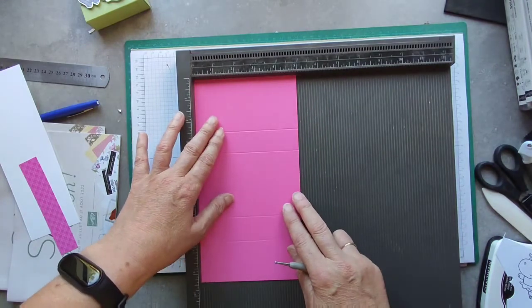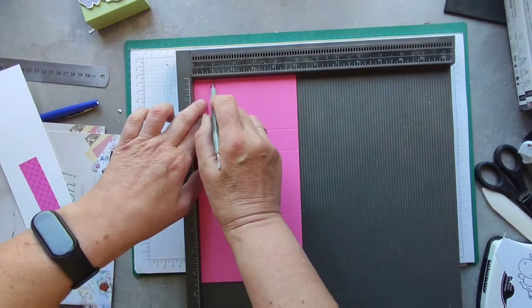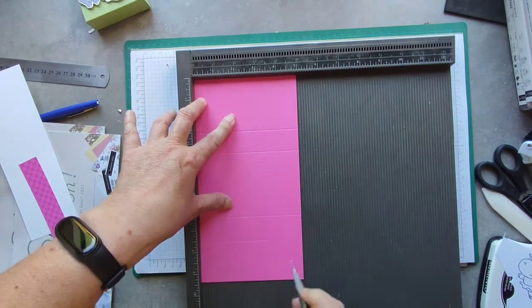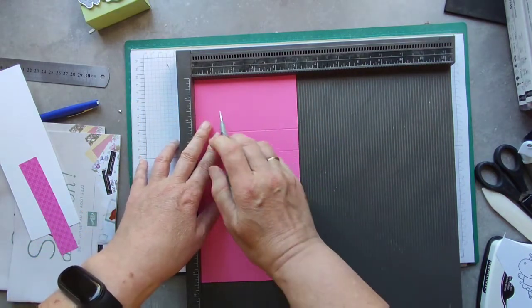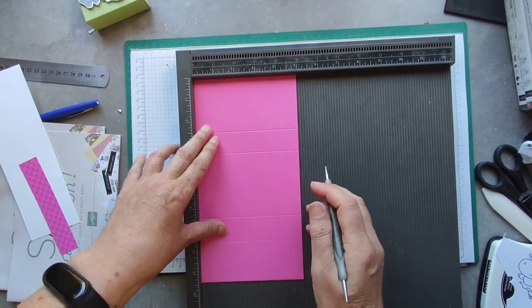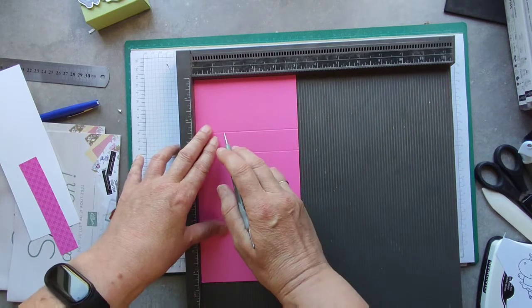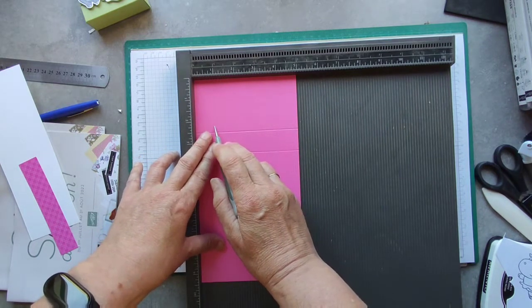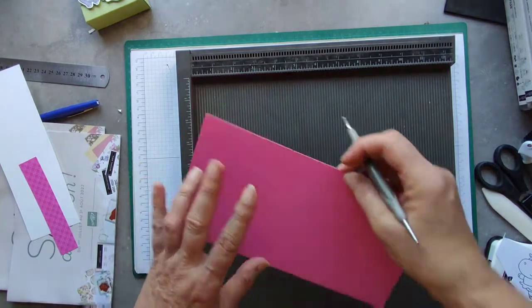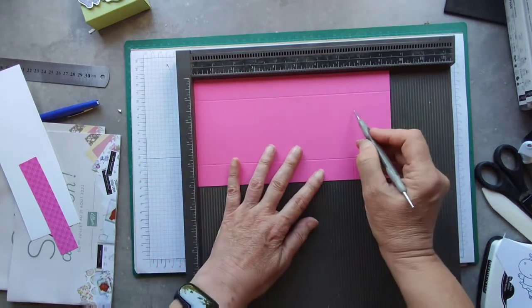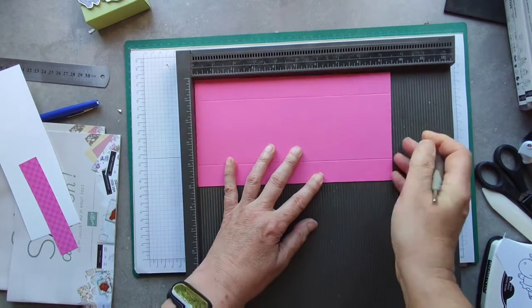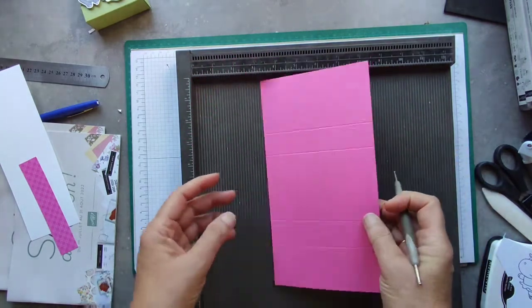On the short side, we are going to score at 1 inch and 4 inches, which is 2.5 by 10 centimeters. You will see a line there, it is a bit crooked.